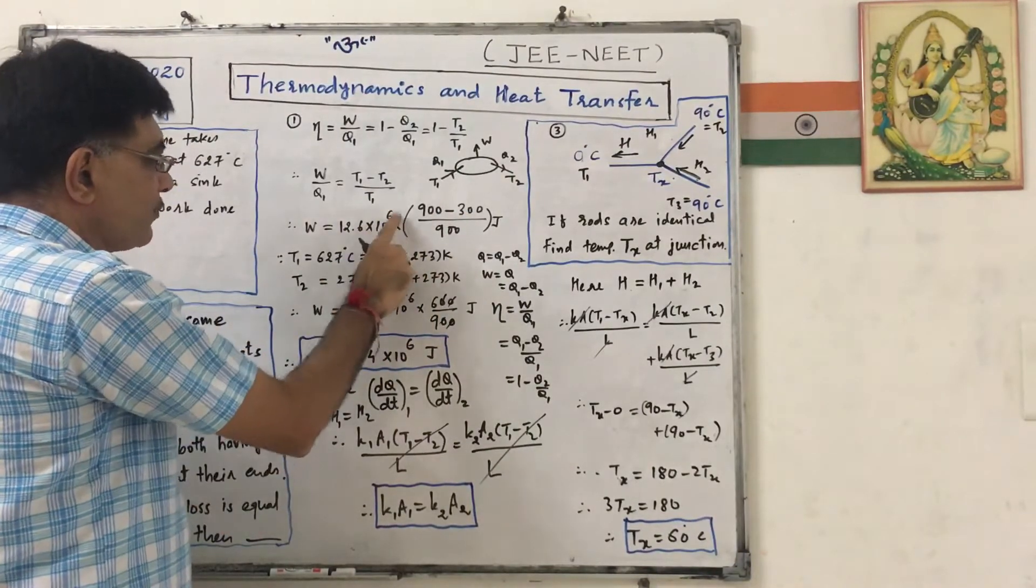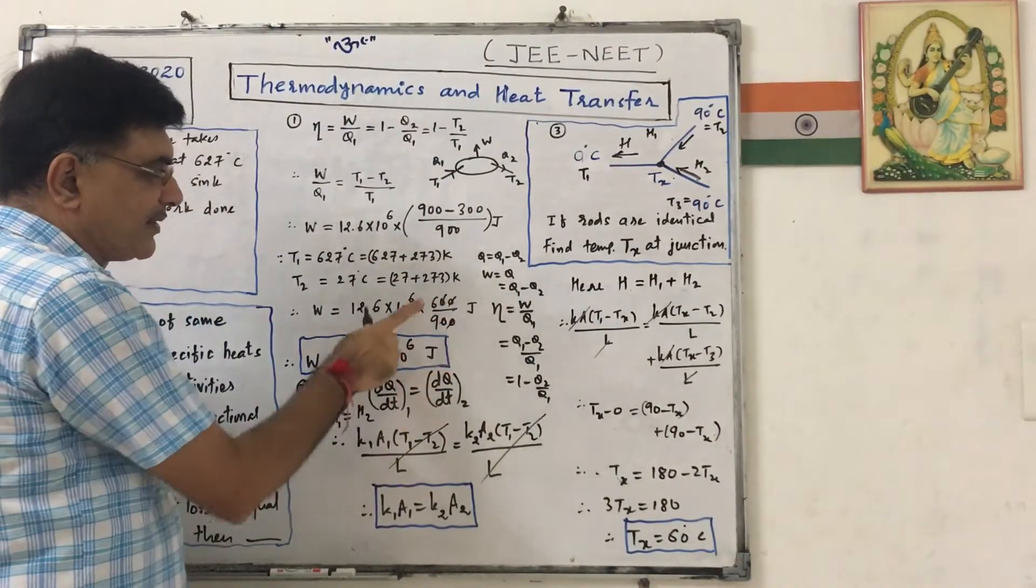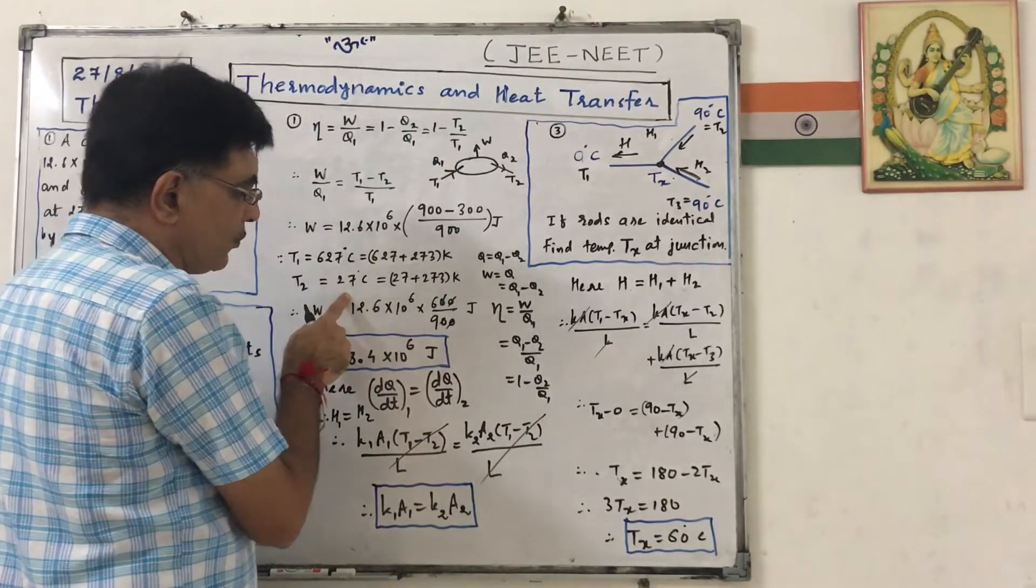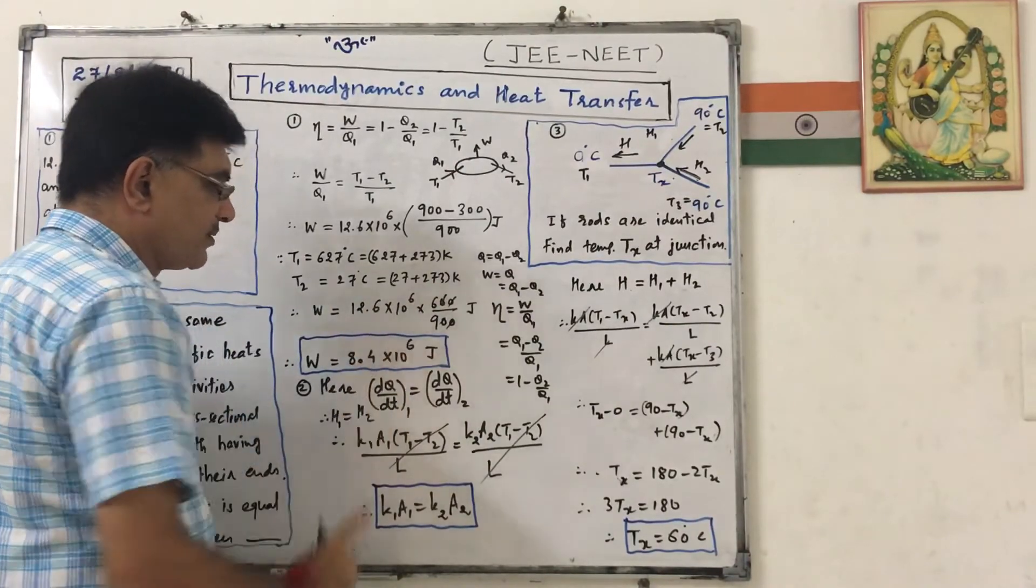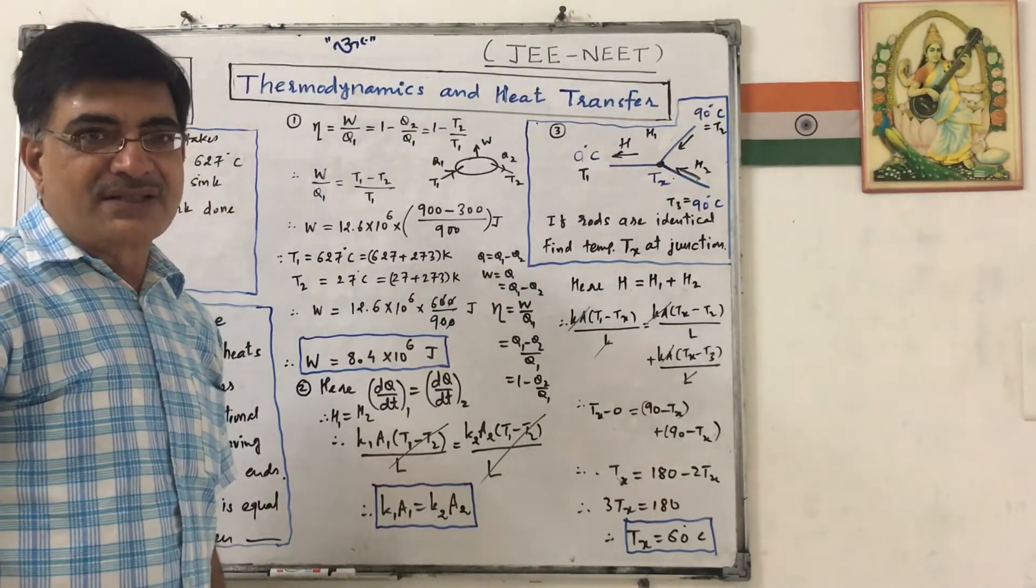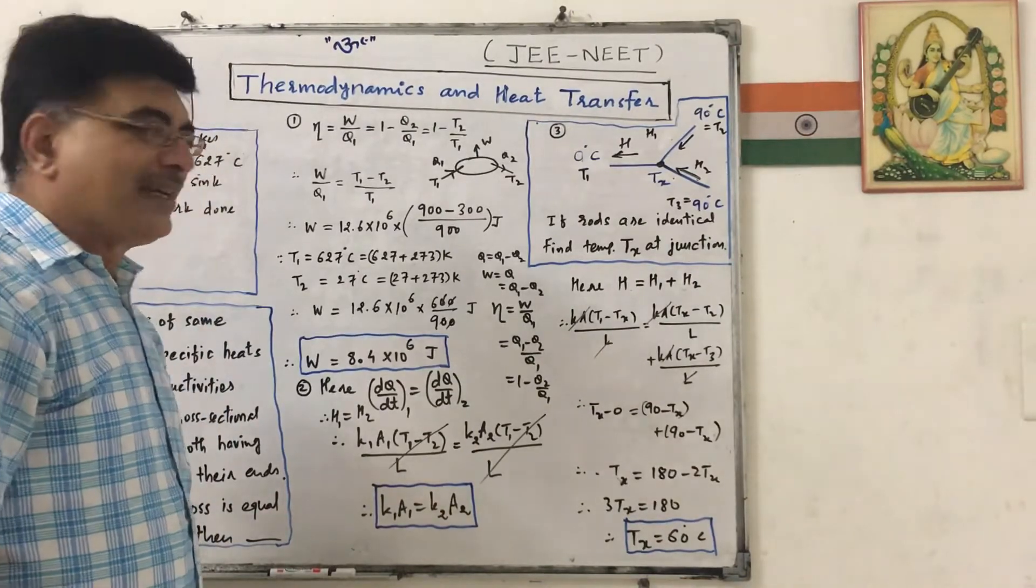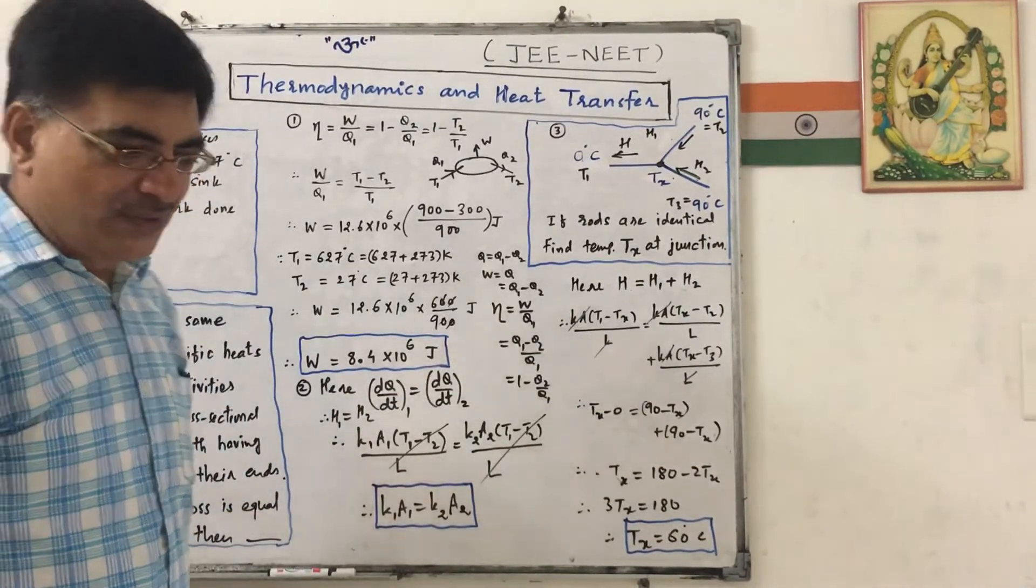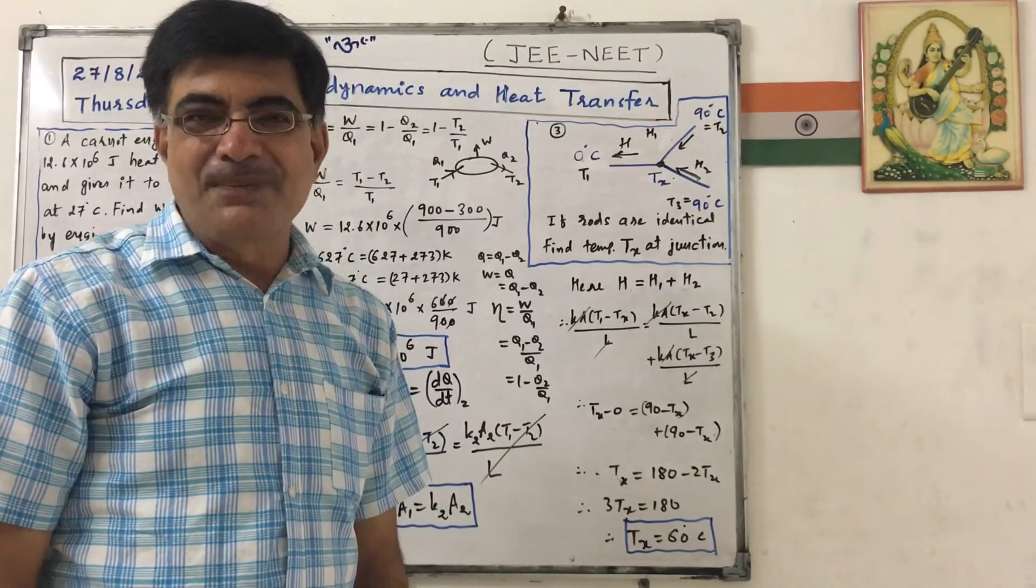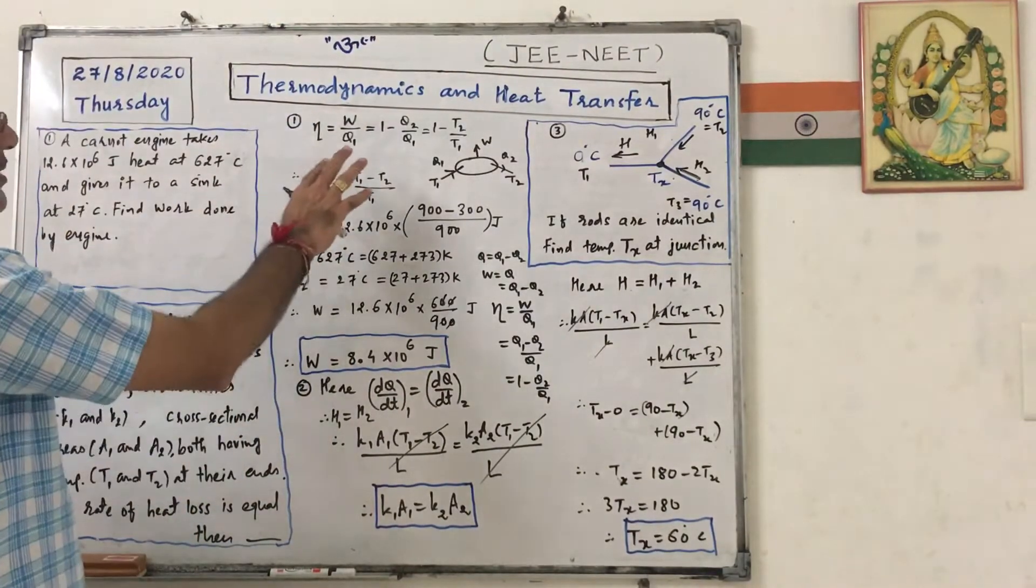So T1 again 893, so W will be equal to 12.6 into 10 raise to 6 into 600 by 893. These zeros will be cancelled, this is 2 by 3 actually. So if I divide this by 3 first, it is 4.2 into 2, so that is 8.4 into 10 raise to 6. This question was asked in NEET sometimes, or JEE. In that time, JEE was known as AIEEE and NEET was known as PMT, pre-medical testing. So this is all about this first one.